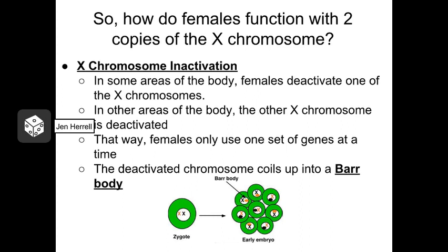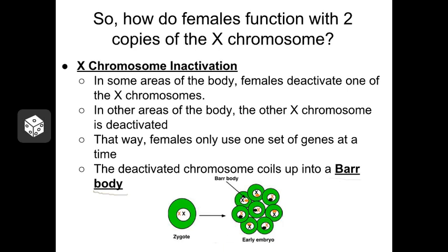So all of this sex linkage begs the question: how do females cope with having two copies of the X chromosome when really only one is necessary? Well, the answer is something called X chromosome inactivation. When a female is still a very young embryo, one of the X chromosomes in some cells will curl up into a little wad called a bar body, and that deactivates it. In other parts of the embryo, the other X chromosome will curl up into a bar body and allow the remaining X chromosome to be in charge. This means that a female's body is really a mosaic of the two X chromosomes, with one being in charge of some parts of the body and the other being in charge of other parts.